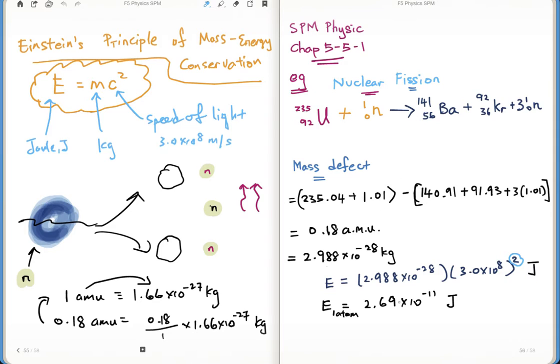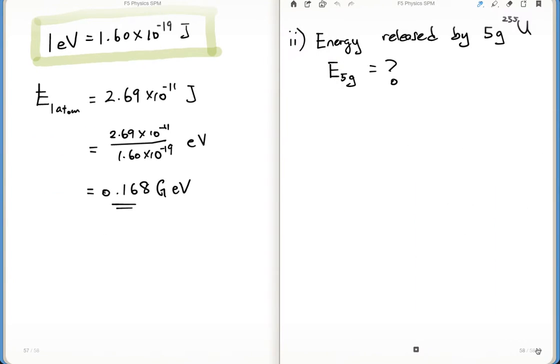One atom, you will get this amount of energy. The next thing you do is you need to find out how many atoms are there in 5 grams. If you know how many atoms are there in 5 grams, then what you do is you convert it and times this number, then you get the answer. Let's come back to 1 mole. In chemistry we have learnt - 1 mole of uranium-235, in mass the same as with the atomic mass number, 235 grams.